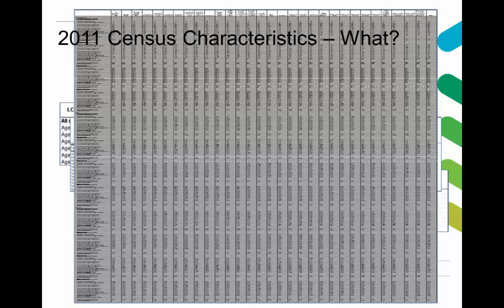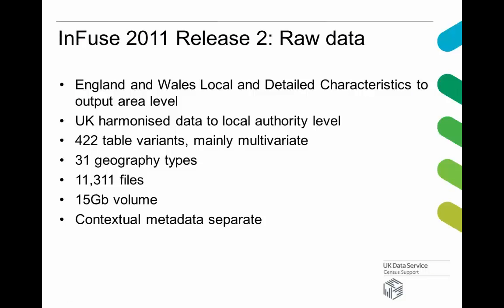A large part of our work is tracking and bringing together all the data produced over a several-year period by the agencies so we can bring it all together in a form which allows us to manage the whole lot and then provide an interface which allows end users such as yourselves to pick the little bits of information they want from within the vast swathes available within the census. The data already in Infuse is mainly what I call the local and detailed characteristics. There's also some UK data, so that's data across the UK but only down to local authority level. That was supplied as 422 different variants of those table layouts.